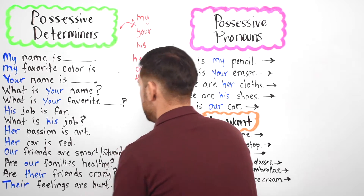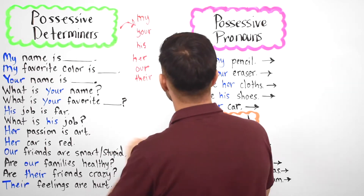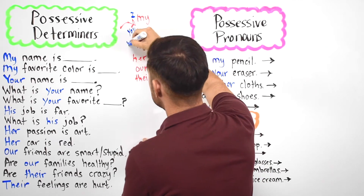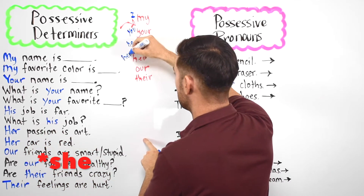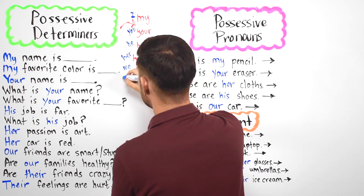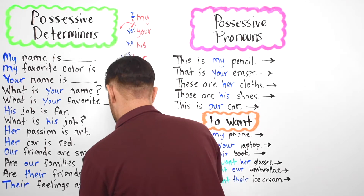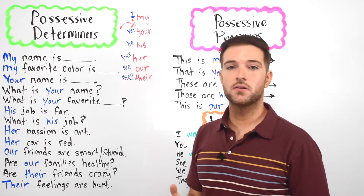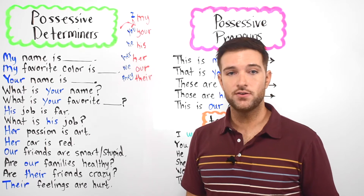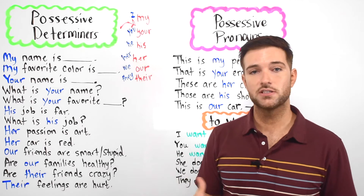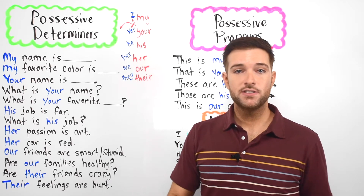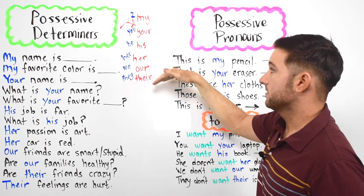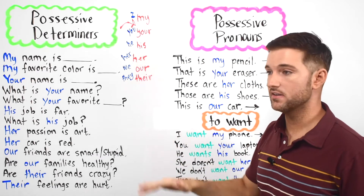My corresponds to I, your corresponds to you, his corresponds to he, her corresponds to her, our corresponds to we, and their corresponds to they. As I've said before in lesson number two, in the English language we do not use gender in the same way that other languages do, such as French, Italian, Spanish, or Romanian. These pronouns do not change according to the number of people or to gender — they always stay the same.